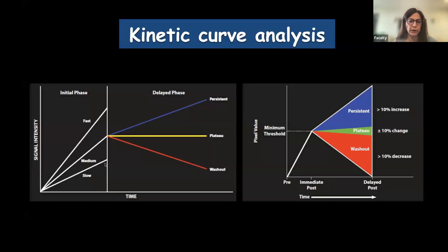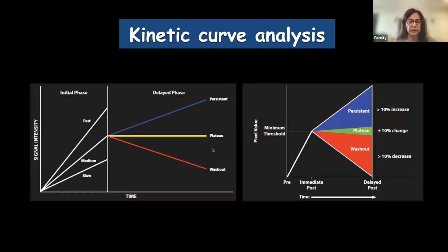The delayed phase is divided into persistent, plateau, and washout. Persistent enhancement is normally seen in benign conditions, but malignant conditions like invasive lobular carcinoma and DCIS can also show a persistent curve. Plateau can be seen in both malignant and benign conditions. Always remember: morphology trumps kinetics — always look at the morphology of a lesion first.